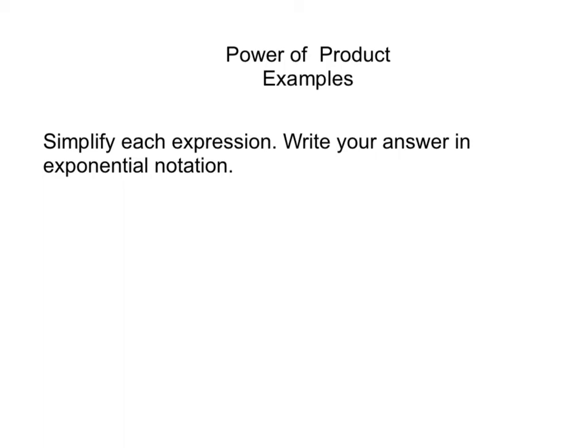So let's say that our first problem is 3 to the 4th times 7 to the 4th. They want us to simplify this and write this in exponential notation. Using my power of a product property, which tells me that if I am looking at a product of 2 algebraic expressions raised to the same exponent, then I'm going to multiply the bases together. So my bases in this case are 3 and 7.